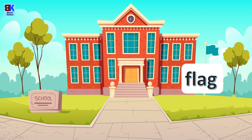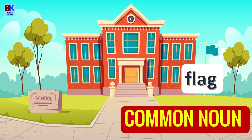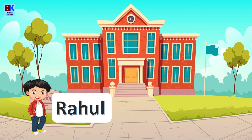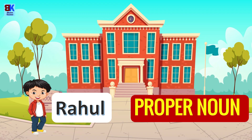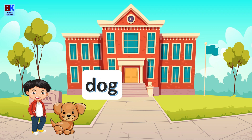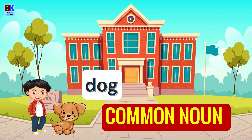Flag — it is a common noun because it is a general name given to a thing. Rahul — absolutely correct, it is a proper noun given to a particular person. Notice that the R is capital here. Dog — absolutely correct, it is a common noun given to an animal.